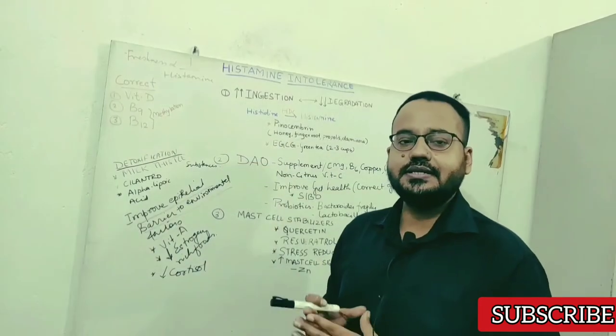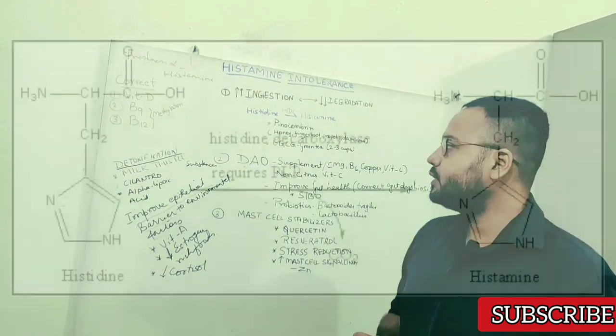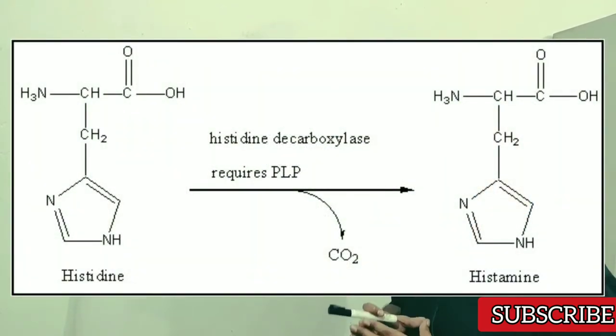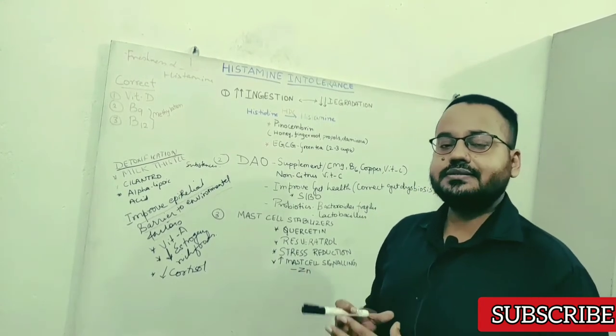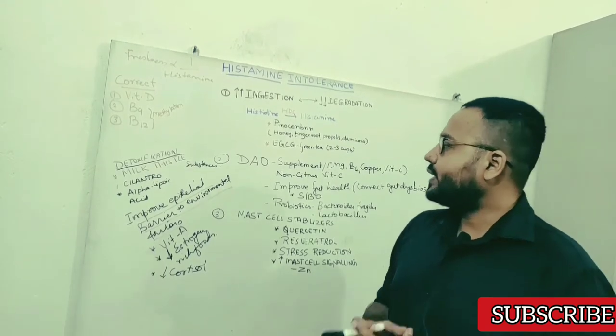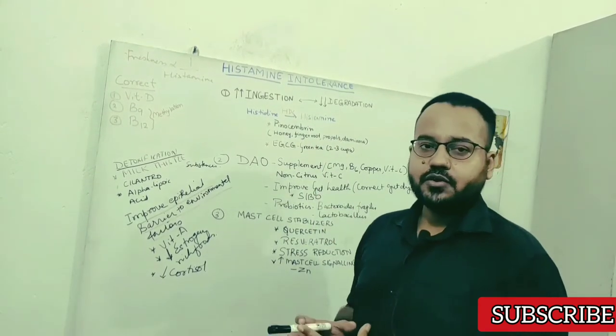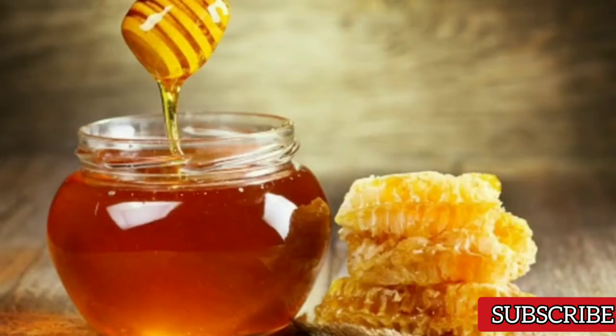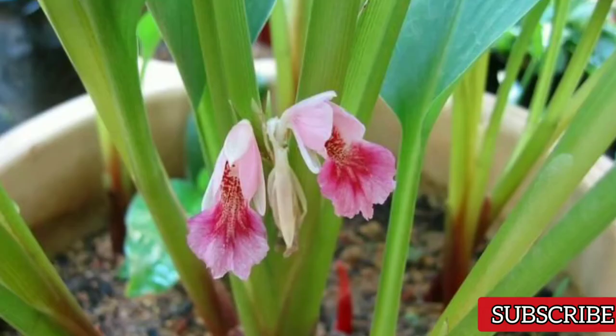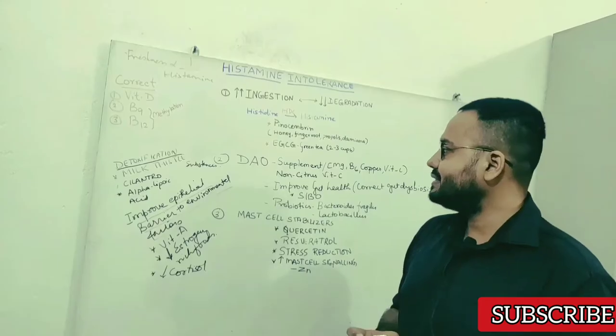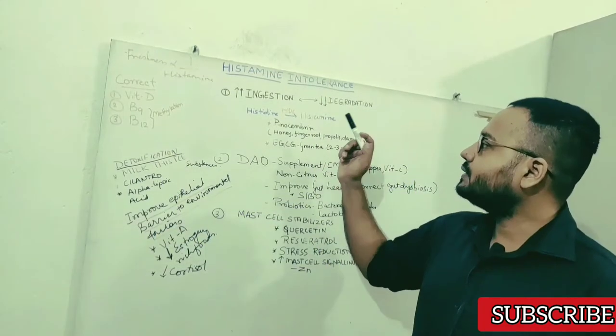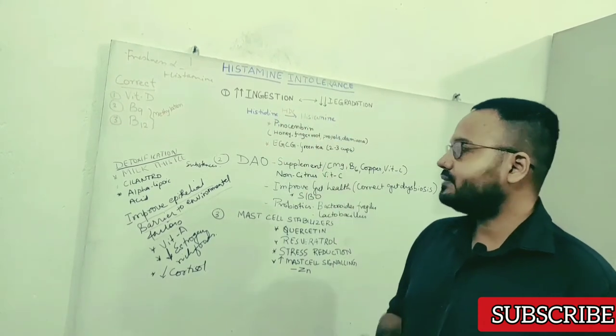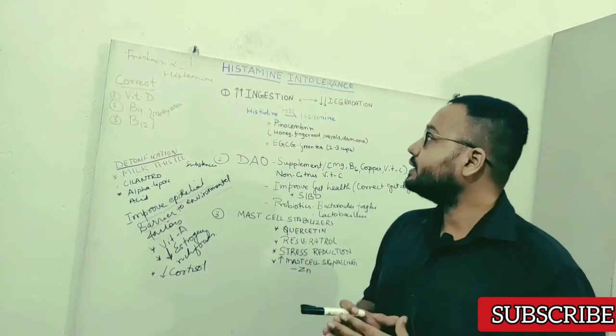So first we will see how histamine is synthesized by our body. It is synthesized from an amino acid histidine which is converted to histamine by an enzyme histidine decarboxylase. So if we use a natural histidine decarboxylase inhibitor, we can decrease histamine production inside our body. For this we can use pinocembrin which is a type of flavonoid, an antioxidant that is found in honey, propolis and certain plants like finger root and damiana. We can also use EGCG which is an antioxidant found in green tea. So these two will block conversion of histidine into histamine and thereby benefit someone who is dealing with histamine intolerance.